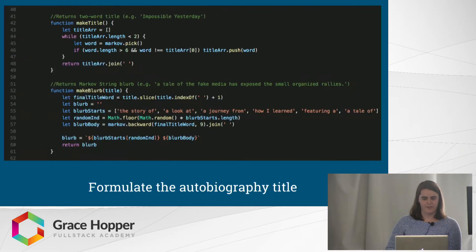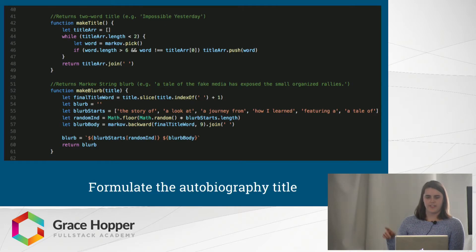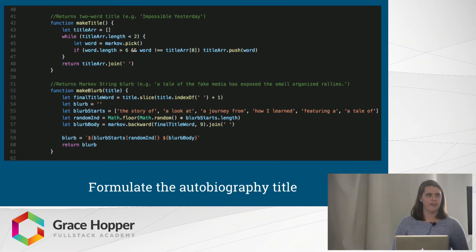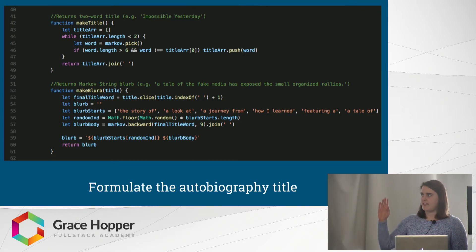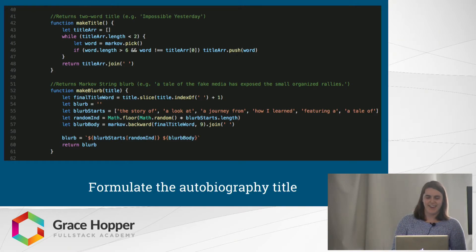Let's look at these helper functions. Here's make_title — it picks two words that are longer than six characters from that whole string of tweets. And make_blurb starts out with one of six random blurb starts that I wrote, just to add a bit of coherency. From there, it chains off the last word in the title to make the Markov chain.